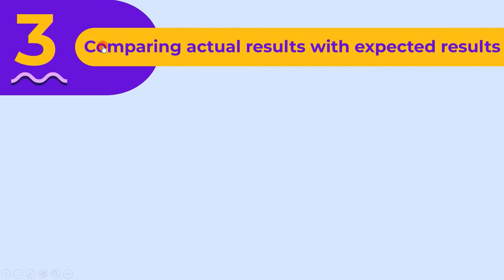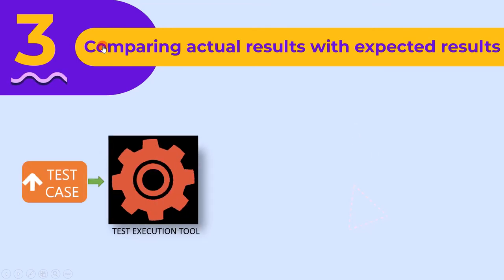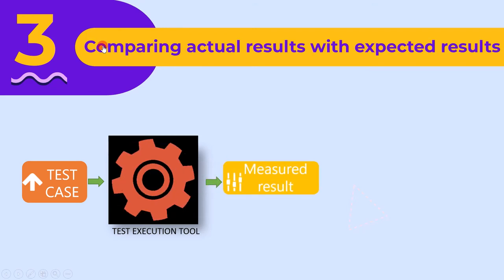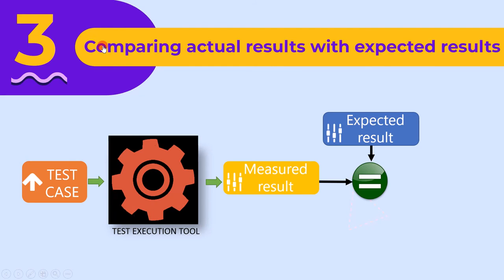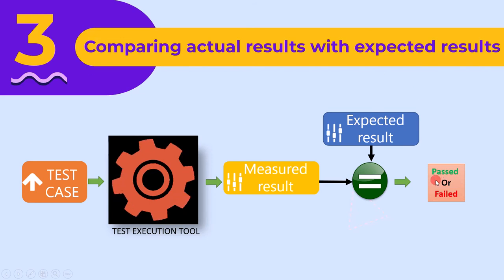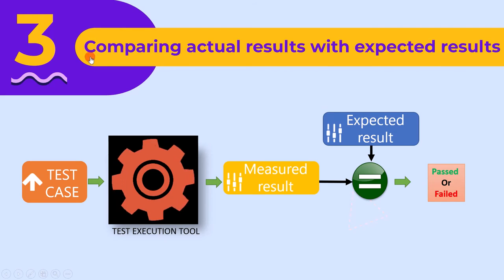The third activity is comparing actual results with expected results. During testing, test cases are executed with the help of a test execution tool, and the measured result is obtained. This measured data is then compared with the expected result. If the measured data is the same as the expected data, we say test cases are passed. But if the measured data is not the same as the expected data, we say test cases are failed.